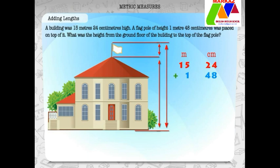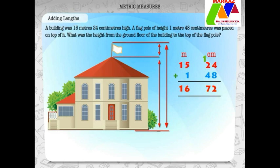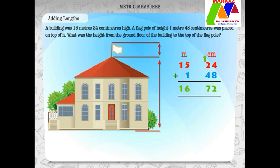Here, we have to perform addition. Adding 15 meters 24 centimeters and 1 meter 48 centimeters, we get 16 meters 72 centimeters. The total height of the building and flagpole is 16 meters 72 centimeters.